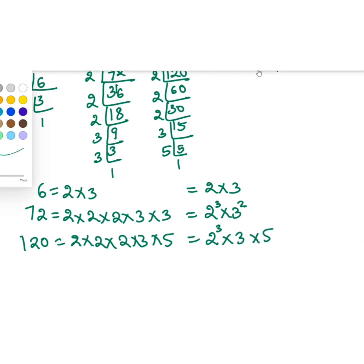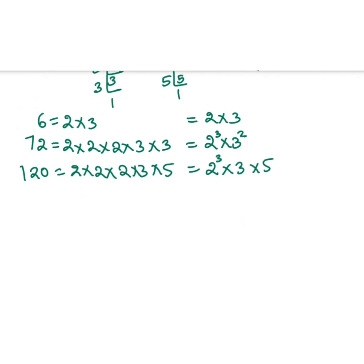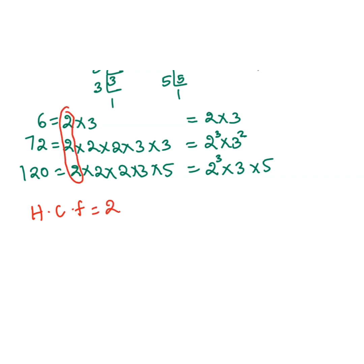To find the HCF, we look for the common factors in all three numbers. 2 is common in all three, so we take 2. Then 3 is also common in all three, so we take 3. Therefore the HCF is 2 × 3 = 6.